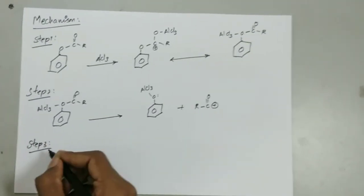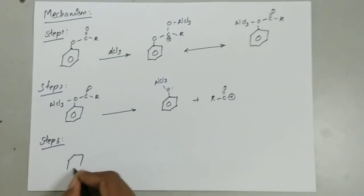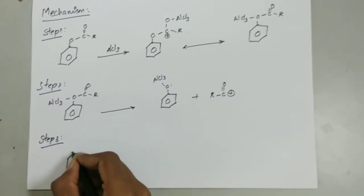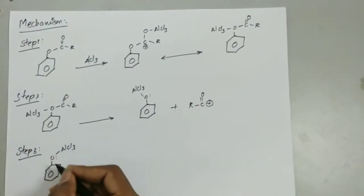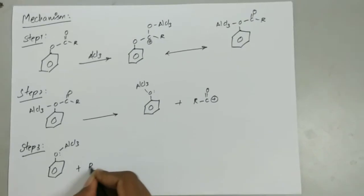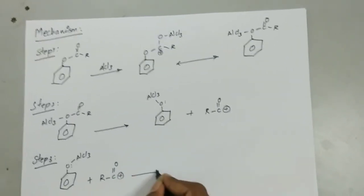Step 3. Now, the acyl group tends to attack the benzene ring in the ortho and para positions. Since the oxygen is an electron donor to the benzene ring, it directs the acyl group to either ortho or para positions.